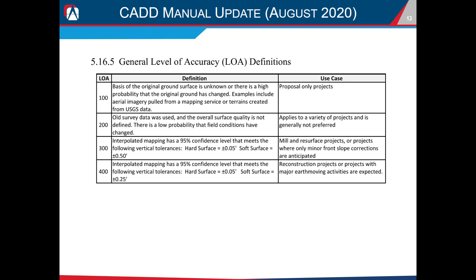Section 5.16.5 covers the various definitions of level of accuracy, which talks about geometry tolerances. As you can see, this is more about survey data and existing ground data, which is more for the roadway side, and something that we'll probably have to get some more information on or more detail in here for the bridge group.